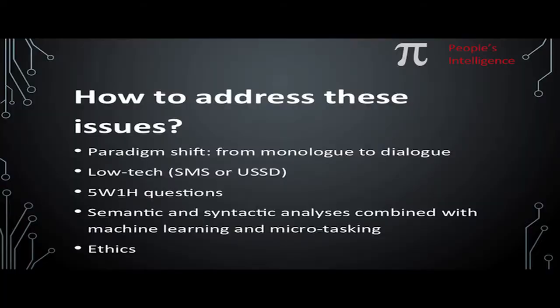Besides asking users to respond to those questions — when did the incident happen, where did it happen, who committed it, how, and what exactly — I think it's also important to use technology that exists now, like semantic analysis, which would allow you, once you get that information into your system, to start clustering it with thematic issues so you can hopefully automatically assess the relevance of information that comes in. You can also combine it with machine learning, which over time would allow your system to become better at it, and microtasking — which I'll come to a little later.